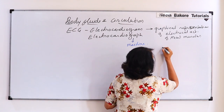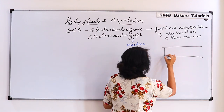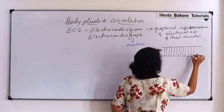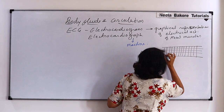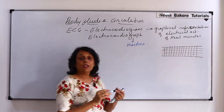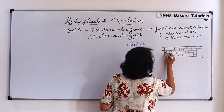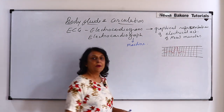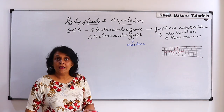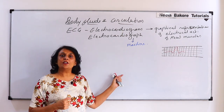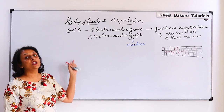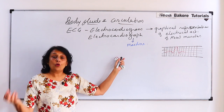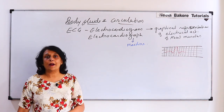The electrocardiogram is a graphical paper strip — like graph paper with boxes — on which we see the waves. Taking the abbreviation, one is ECG. The machine is the electrocardiograph, and the recording we call it electrocardiogram.